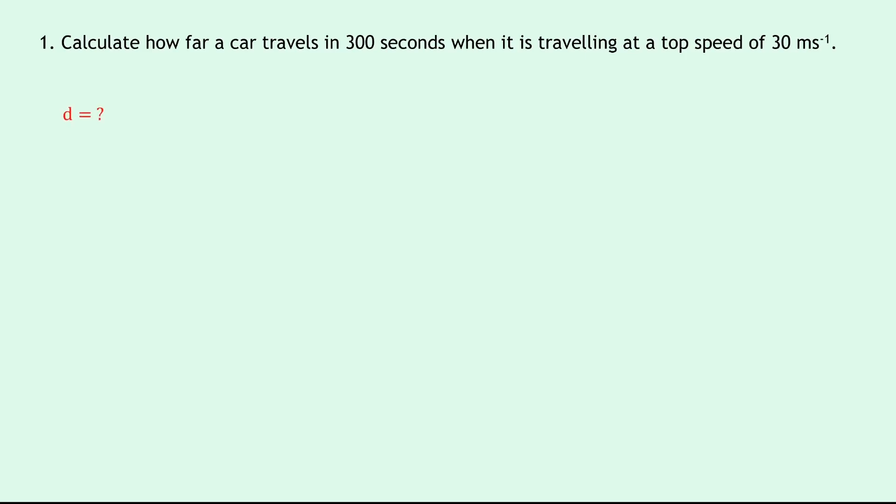We're asked to calculate the distance in this question, how far the car travels, so I've got d equals question mark. My speed is equal to 30 meters per second and my time is 300 seconds. Then I want to choose the relevant equation, which is speed distance time. So I'm going to write down my equation d equals vt. That would get me one mark straight away, and then I'm going to substitute in my numbers. So I've got v is 30 and t is 300, so that becomes 30 times 300. And lastly I want to state my final answer with the units, which is 9,000 meters.